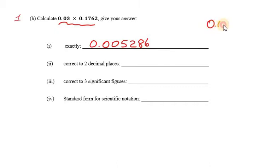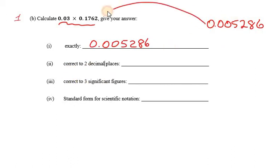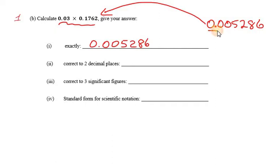We're going to take that exact answer and use it to do the other parts. Remember, this exact answer is the same value as the original problem. What we're going to do is correct it to two decimal places, meaning after the point we want to count every place and write up to two.